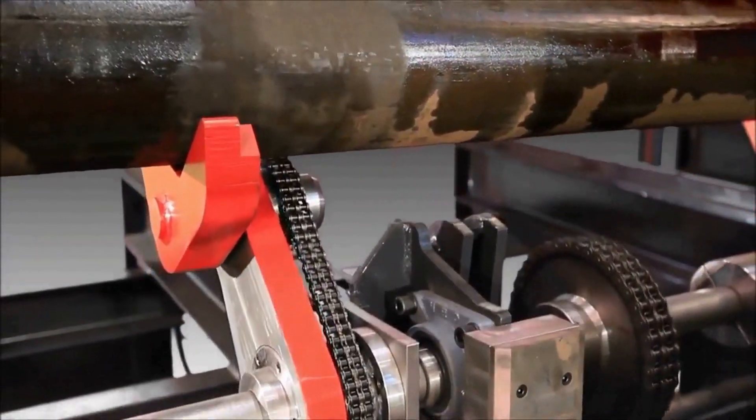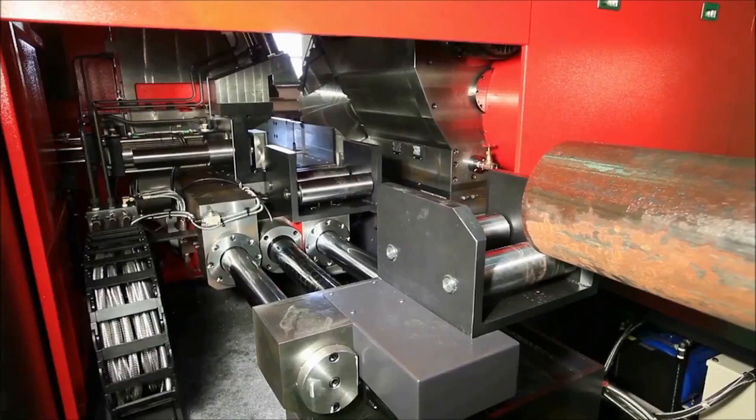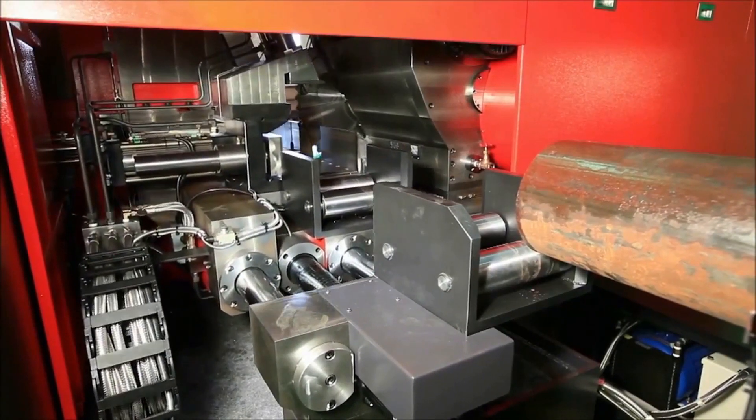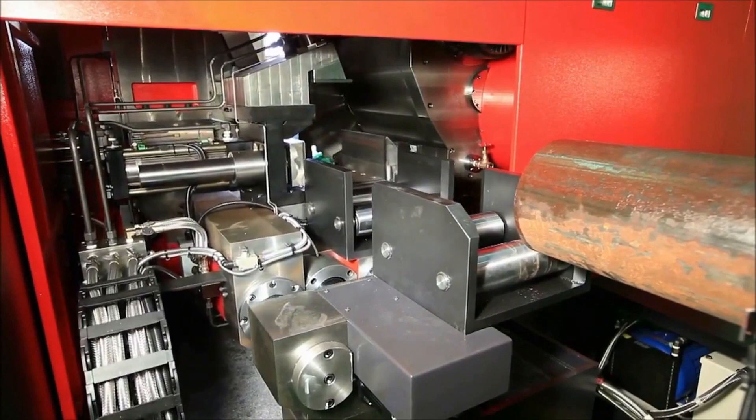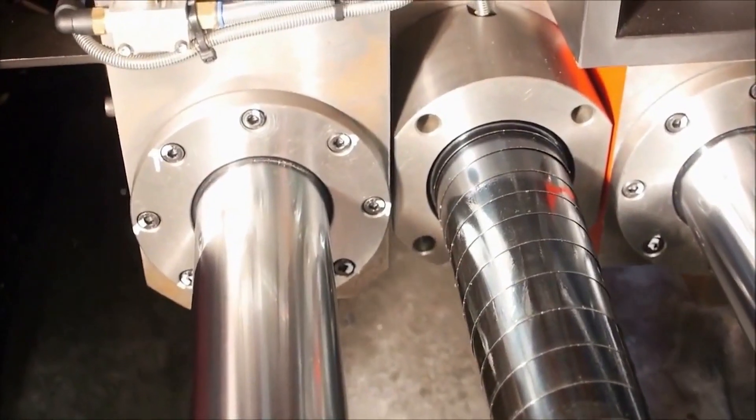An automatic bar loader facilitates continuous cutting by automatically loading bars into the saw. The feed mechanism uses a ball screw to assure accurate part indexing.